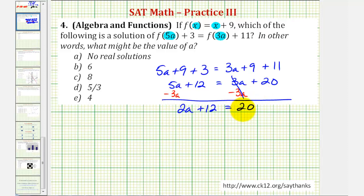Now we have a two-step equation, so we'll isolate the a term by subtracting 12 on both sides. So now we have two a equals 20 minus 12 is eight. Two a means two times a, so to solve for a, we'll divide both sides of the equation by two.